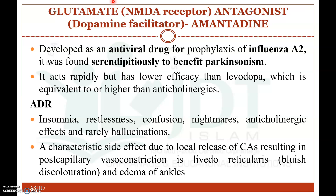The next class is glutamate or NMDA receptor antagonists, also known as dopamine facilitators, like amantadine. Amantadine was originally developed as an antiviral drug used for prophylaxis of influenza A2, but was found serendipitously to benefit Parkinsonism. It acts rapidly but with lower efficacy than levodopa, being equivalent to or slightly better than anticholinergic drugs. Adverse effects include insomnia, restlessness, confusion, nightmares, anticholinergic effects, and rarely hallucinations. A characteristic side effect is livedo reticularis and edema of the ankles due to local release of catecholamines.